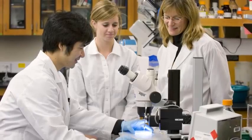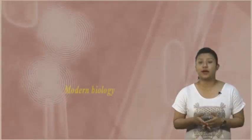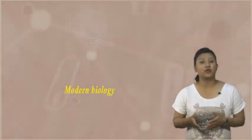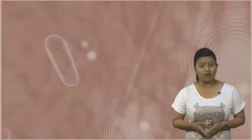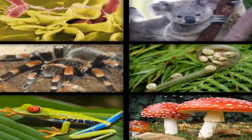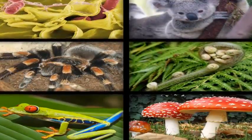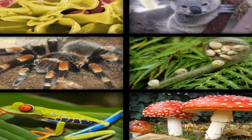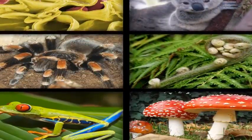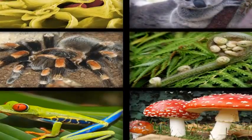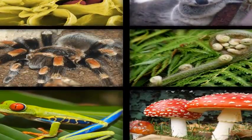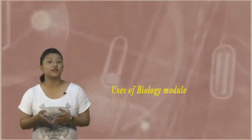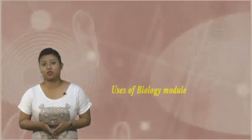Modern biology is a vast and eclectic field composed of many branches and sub-disciplines. However, despite the broad scope of biology, there are certain general and unifying concepts within it that govern all study and research, consolidating it into a single coherent field. In this module, we will be studying the finest information of various disciplines of biology.